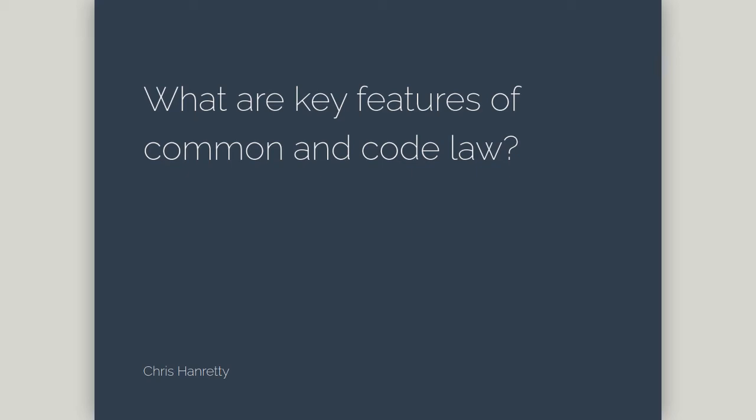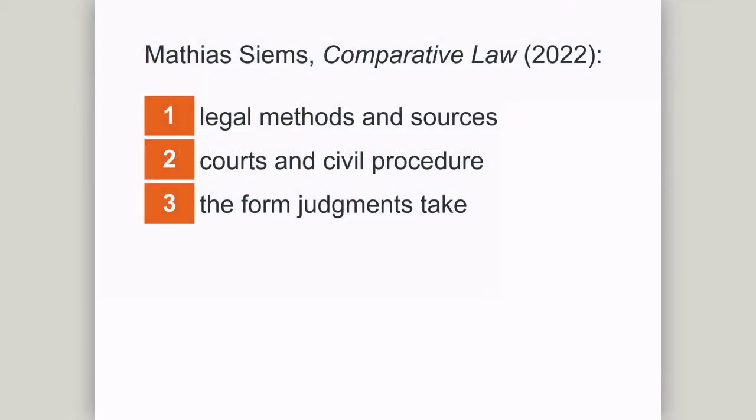Some of the main differences between code law and common law systems are set out by Matthias Siems in his textbook Comparative Law. He groups the main differences into three categories: legal methods and sources, courts and civil procedure, and the form judgments take.